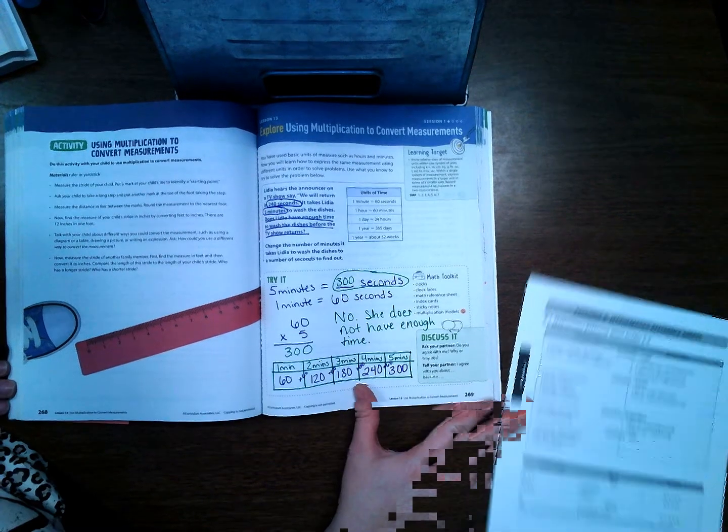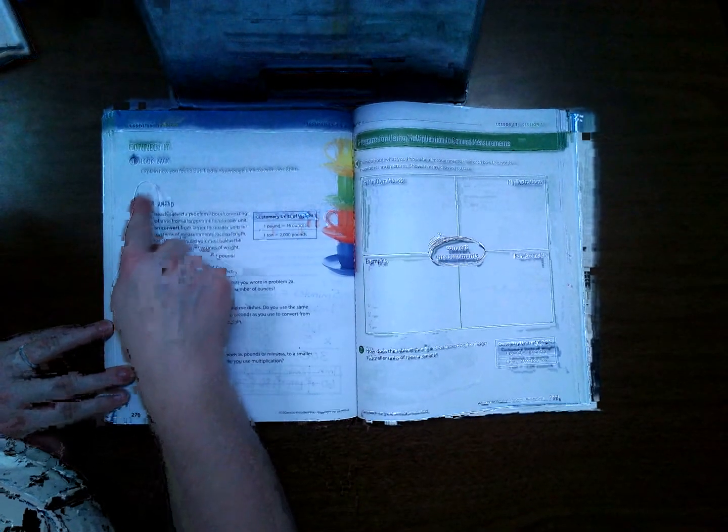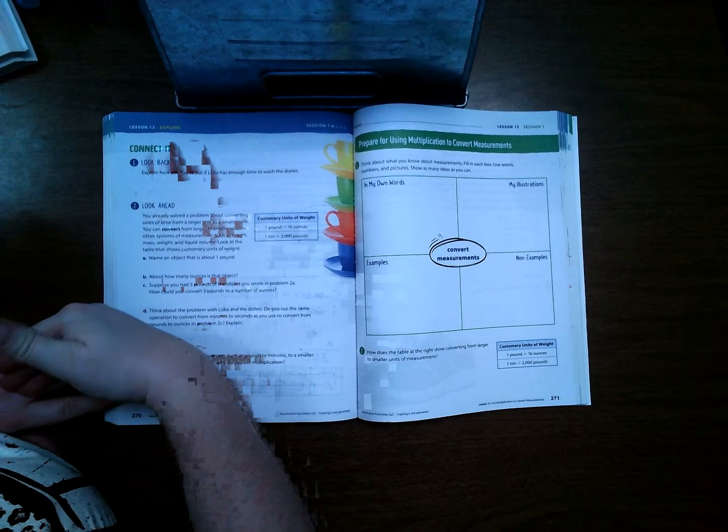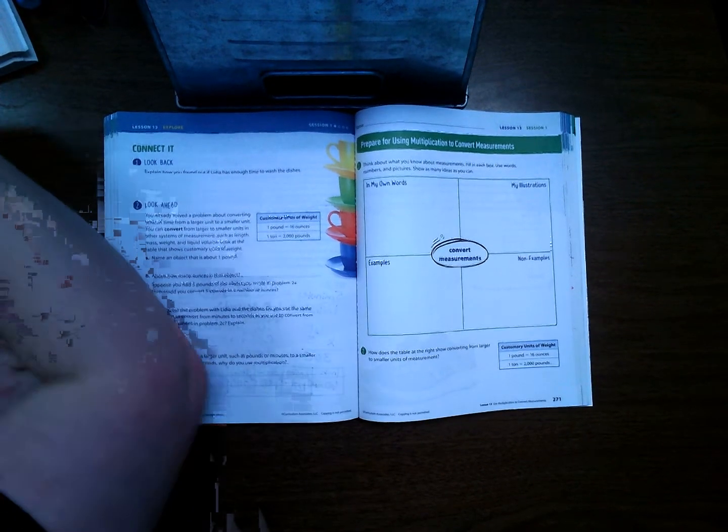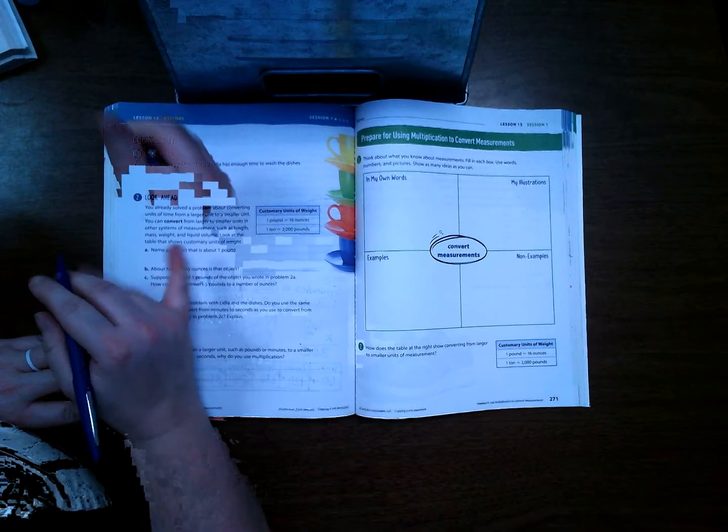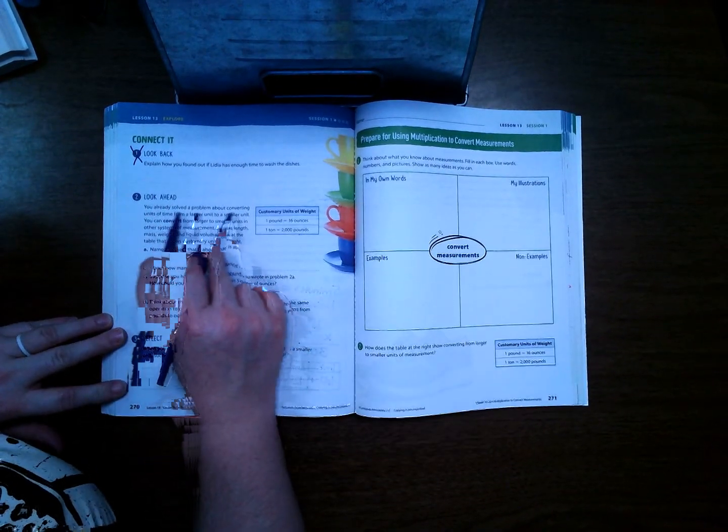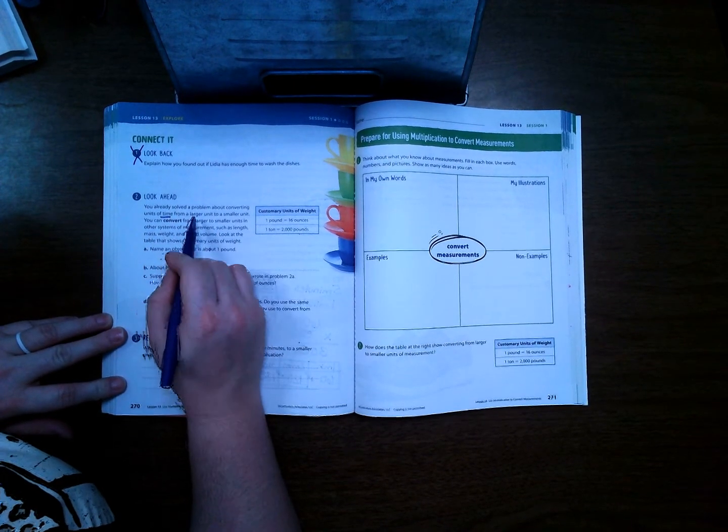So I showed you two ways here that you can take a look and convert that measurement. Let's go ahead and go to page 270. Okay, explain how you found out if Lydia has enough time to wash the dishes. So we did it two different ways and you can choose whichever way you want, but we're not going to answer this question on paper right here because it's going to depend on which way you use.